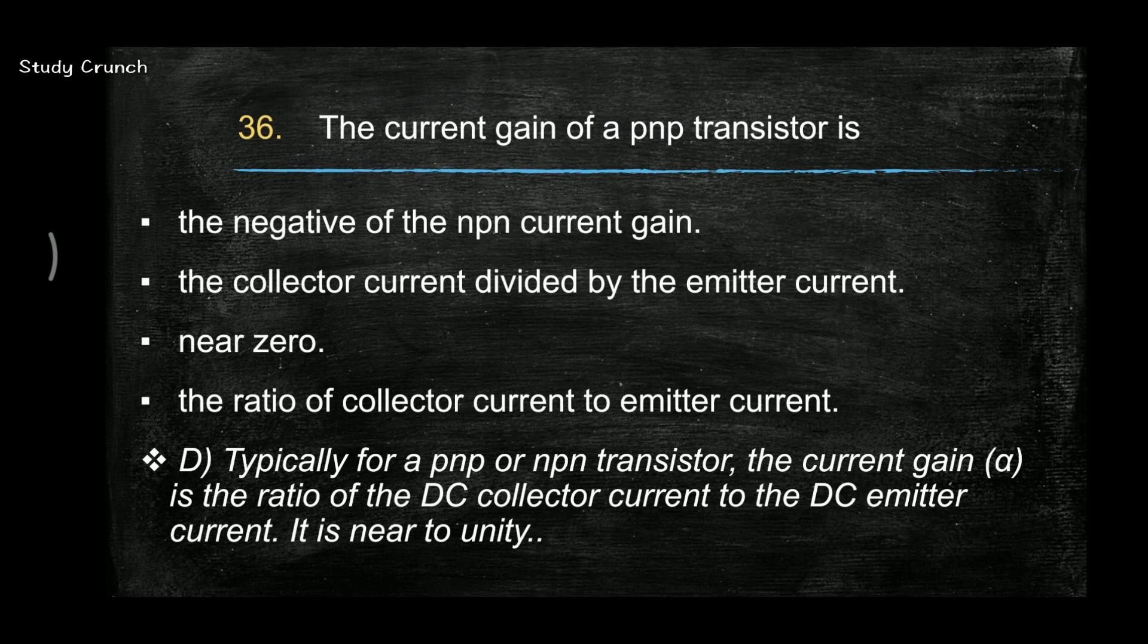Next, the current gain of a PNP transistor is ratio of collector current to the emitter current. Typically, for PNP and NPN, the current gain is the ratio of DC collector current to the DC emitter current, which is nearly unity. So the answer is the ratio of collector current to the emitter current is known as current gain of a PNP transistor.